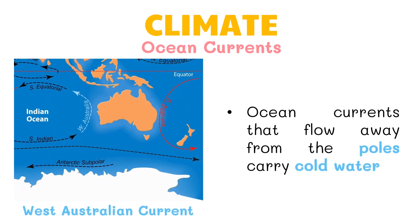Ocean currents that flow away from the poles carry cold water. The air above the cold water has lower temperature. When ocean currents bring cold water towards a coastal region, the temperature of that area decreases, resulting in a cold climate. For example, the southern parts of Singapore and Indonesia have lower temperatures because of the cold air brought by the West Australian current.